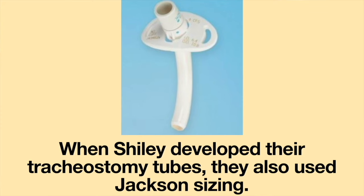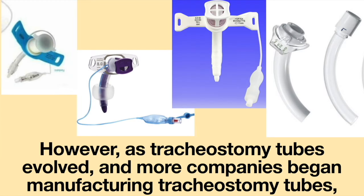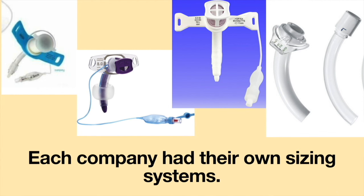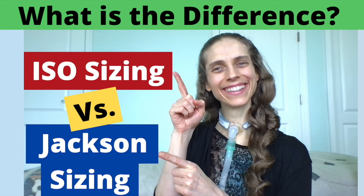When Shiley developed their tracheostomy tubes, they also used Jackson sizing. However, as tracheostomy tubes evolved and more companies began manufacturing tracheostomy tubes, each company had their own sizing systems. For more information about tracheostomy tube sizing, please see the following video: ISO sizing versus Jackson sizing.